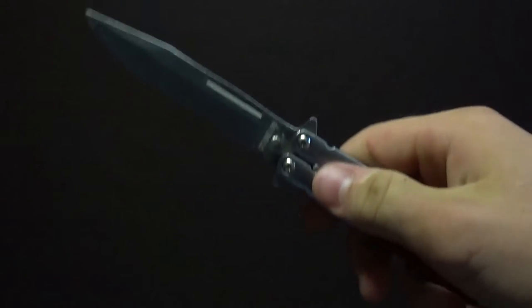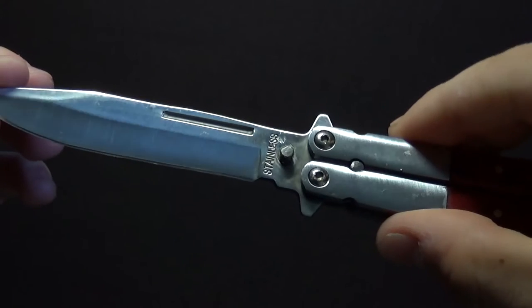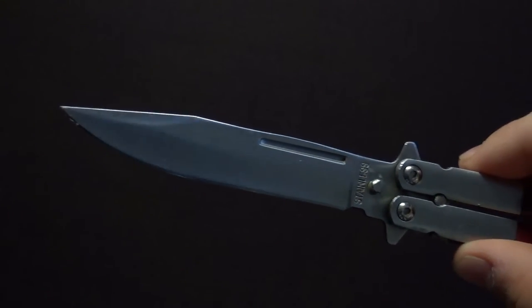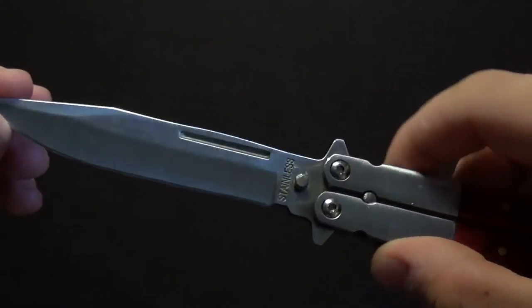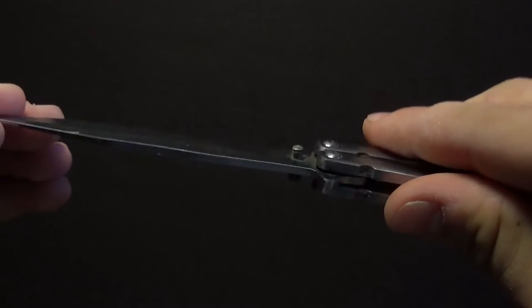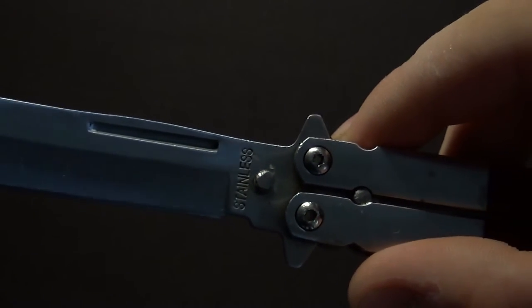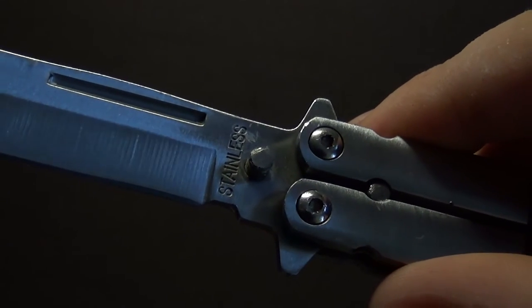С первого взгляда обычный клинок типа Drop Point, характерный для большинства китайских полисонгов, почему-то имеет дол только с одной стороны, плюсом обувь клинка немного волнистый. У верхнего шпенька видна устампована надпись Stainless.